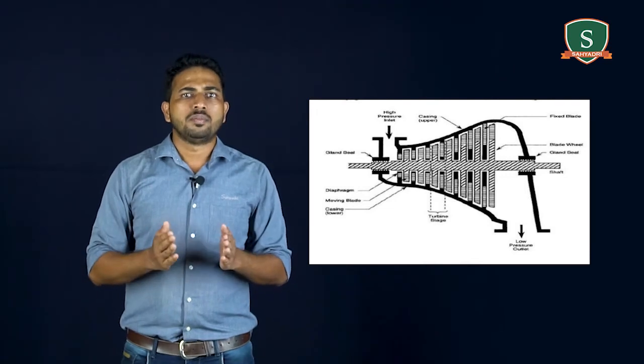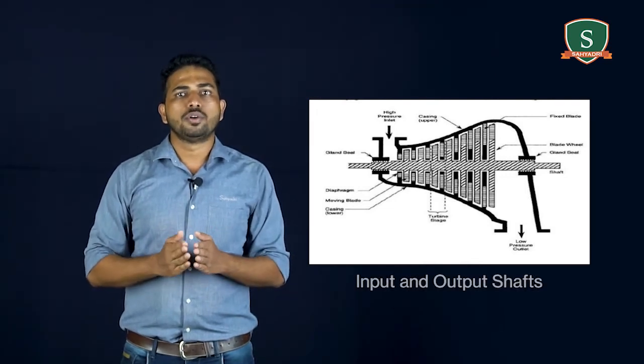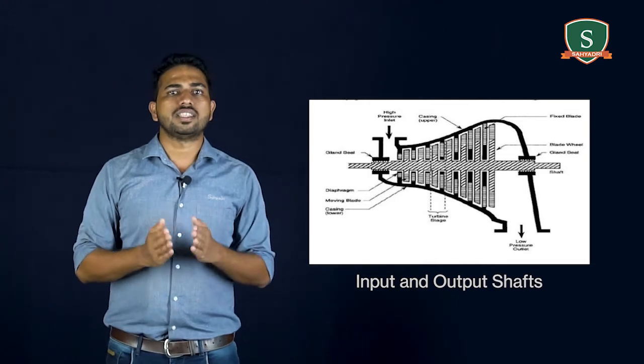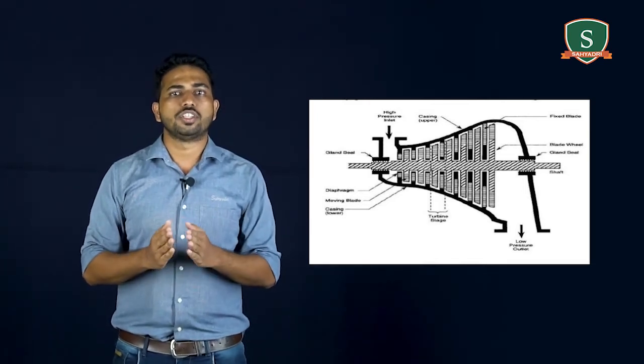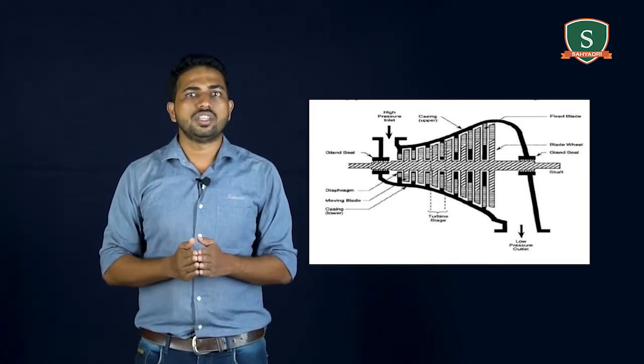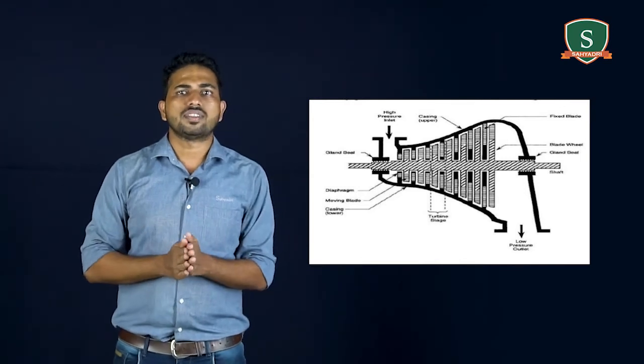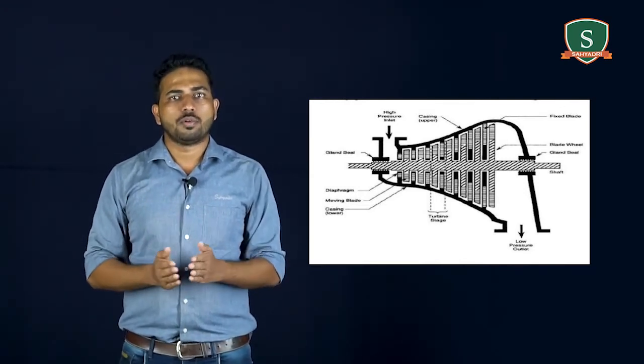Now third important part is input and output shaft. These shafts transfer mechanical energy from one machine to another resulting in change of speed and torque. Shafts are necessary depending upon the type of turbo machines.